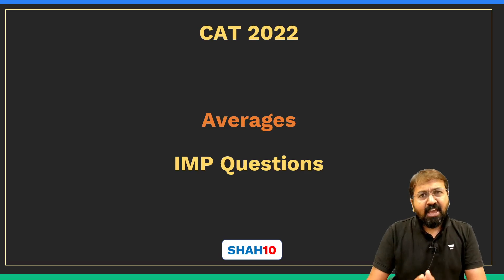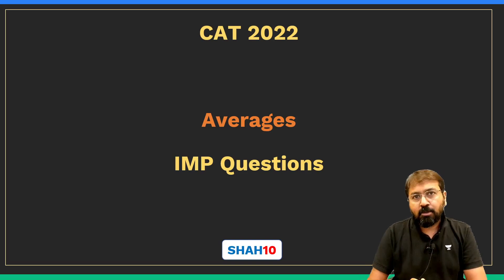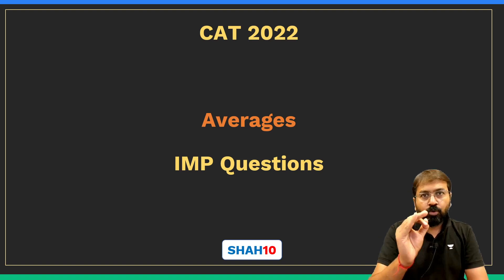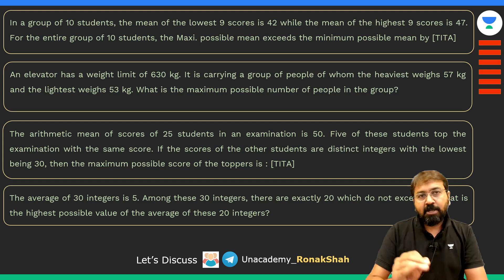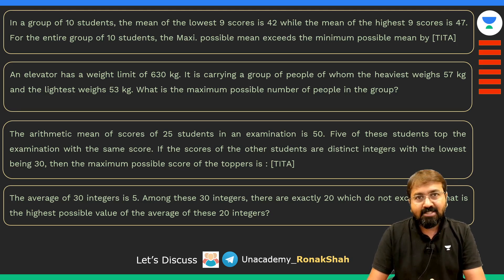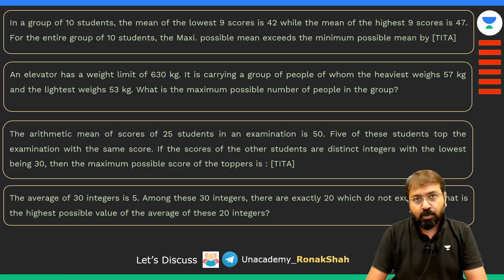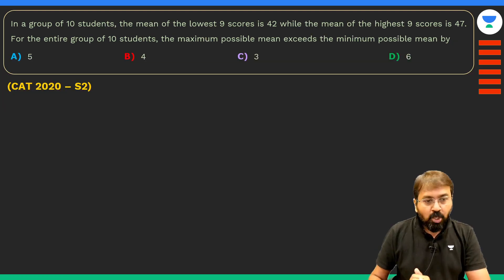Average-based questions are very common in CAT exams, particularly finding the maximum or minimum possible average. In this video I'm going to solve four important average-based questions — all previous year CAT questions. Once you understand these, you can confidently solve any such question in future. The first question requires a unique approach that you should remember.